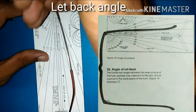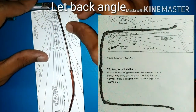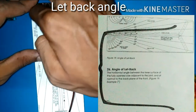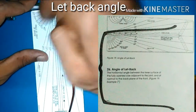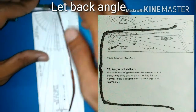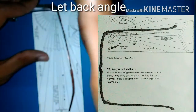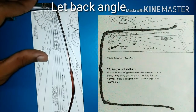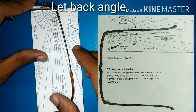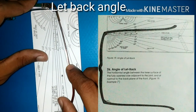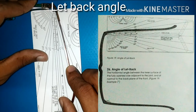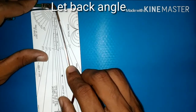The angle of lift back is the angle at which the temple bends back with respect to the inner surface. To measure that, place the inner surface of the front plane along the sides of the ruler and try to measure at what angle it inclines. For this frame it's around 10 degrees.